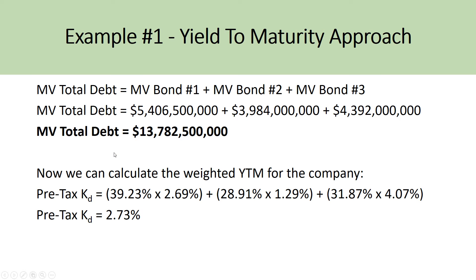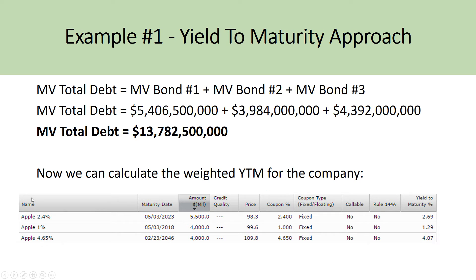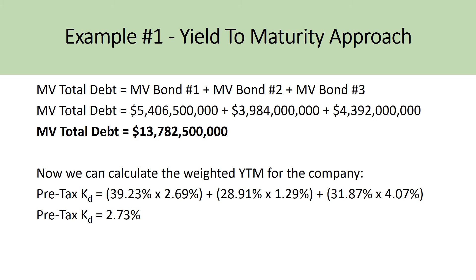You then multiply the weighting by that yield to maturity to get a weighted yield to maturity for this company of 2.73%. So in this example, if these are the only bonds and debt available to this company, the pre-tax cost of debt would be 2.73%. You then calculate 1 minus the effective tax rate — in this case 40% — to get an after-tax cost of debt of 1.64%. This is the most accurate method to estimate the current cost of debt, because on a day-to-day basis these bonds change in value, and therefore their yield to maturity changes, reflecting the current cost of debt.